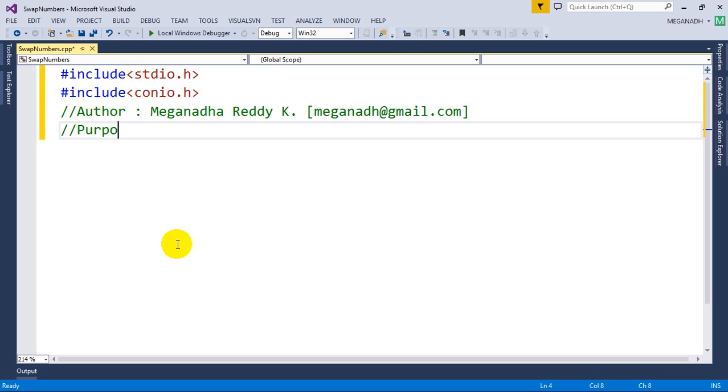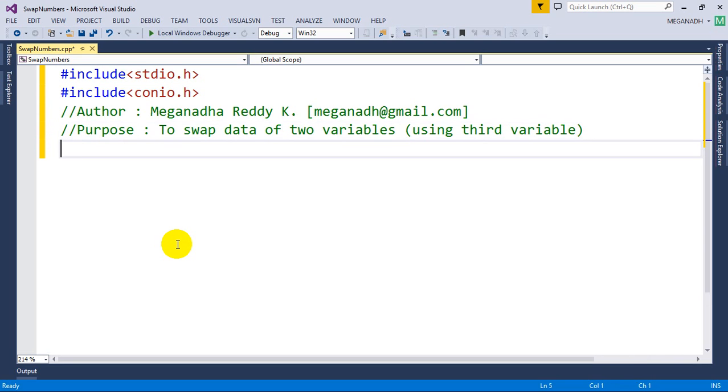And then I'm going to write here purpose. So the purpose of this program is to swap data of two variables using third variable. Okay, now how to do it, let's get started.